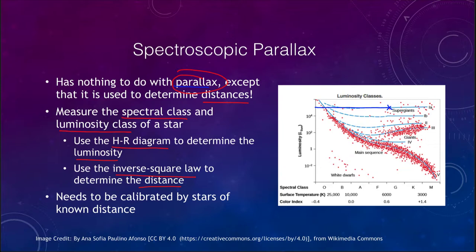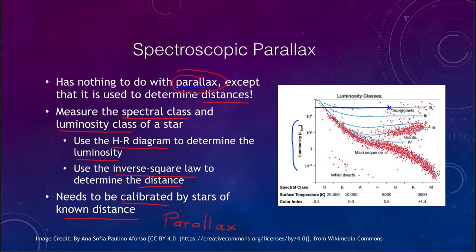As with other methods, this needs to be calibrated. We need stars of known distance — perhaps through regular parallax — to calibrate where the luminosity scales fit on the HR diagram. Once we have calibrated using several stars, we can then use this to determine distances to other stars of unknown distance just by determining their spectral classification.